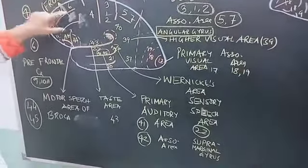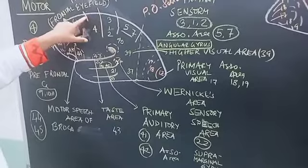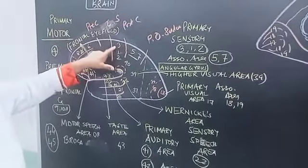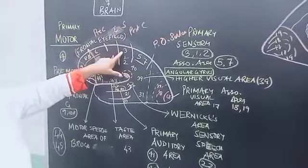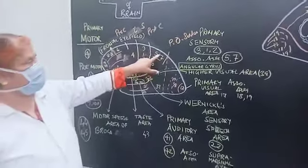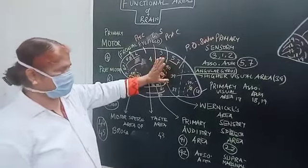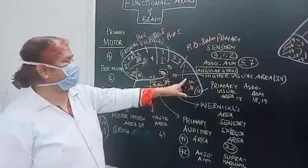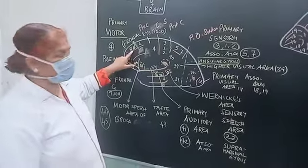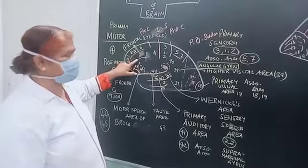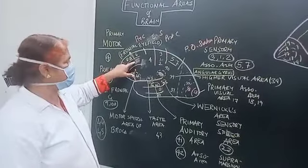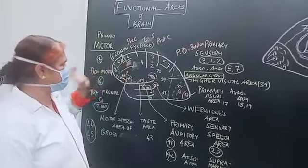This is your central sulcus. This is your precentral gyri and this is postcentral gyri. This is the parieto-occipital area. This is the interparietal sulcus, superior parietal lobule, and inferior parietal lobule. This is the lunate sulcus in the occipital area. This is the superior frontal gyri, sulci, and inferior frontal sulci. So this is the superior frontal gyri, middle frontal gyri, and inferior frontal gyri.